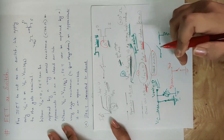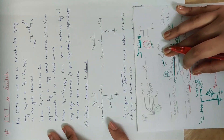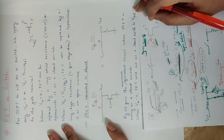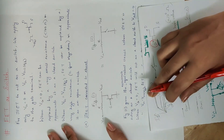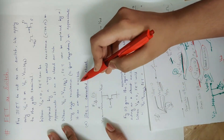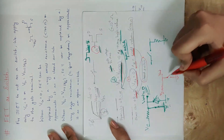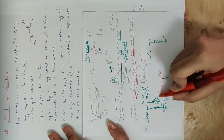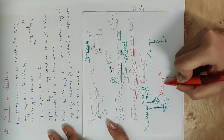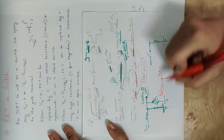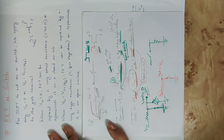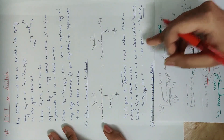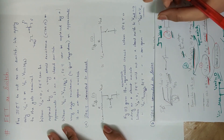When VGS equals VGS off: if VGS equals 0, the FET acts as a closed switch and Vout equals 0. When VGS equals VGS off, FET acts as an open switch and Vout is approximately equal to Vin.